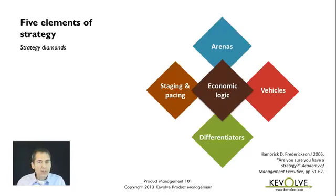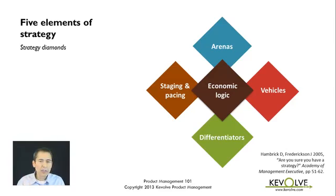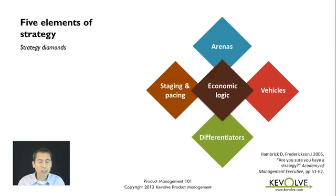The term strategy is used very loosely — people talk about strategy for everything. So we're going to try to be a little more defined when we speak about strategy. In particular, we're going to talk about five elements of strategy. This again came out of Hambrick and Fredrickson's work — from a 2005 article. This is a good one to look up.